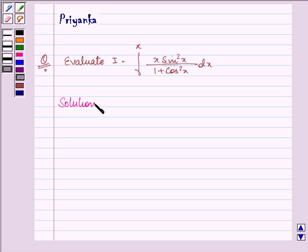Let's proceed with the solution. We have the given integral as 0 to π, x sin²x over 1 plus cos²x dx.